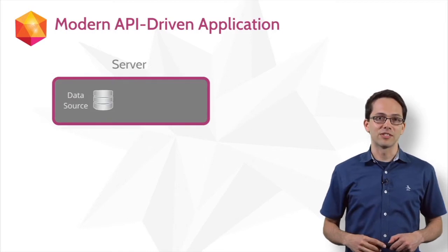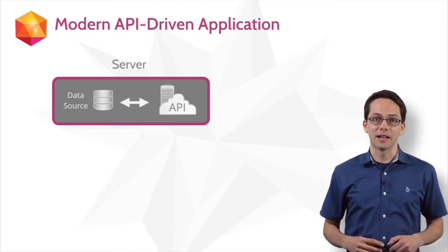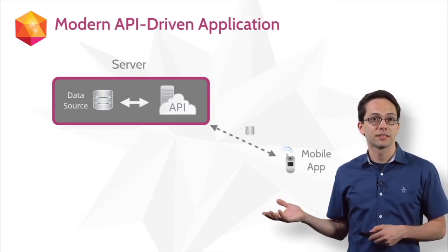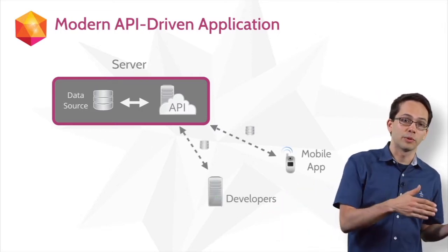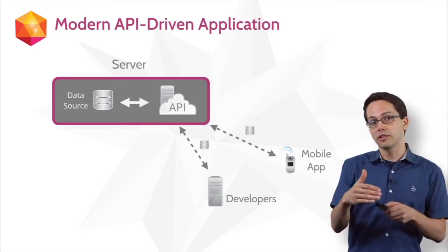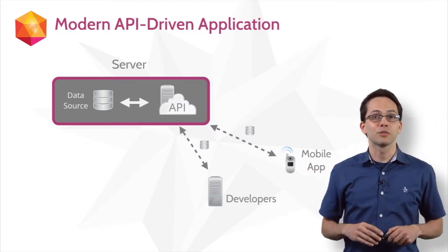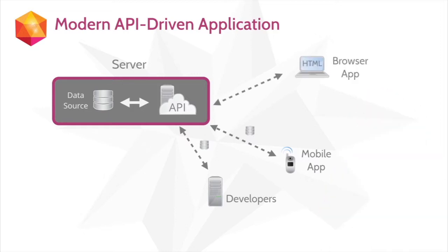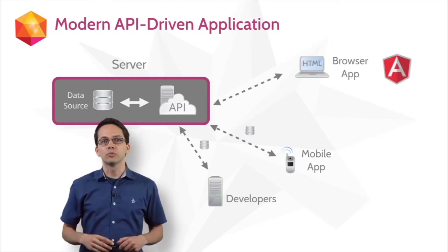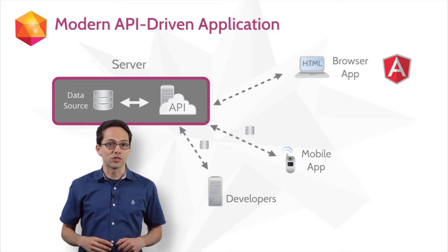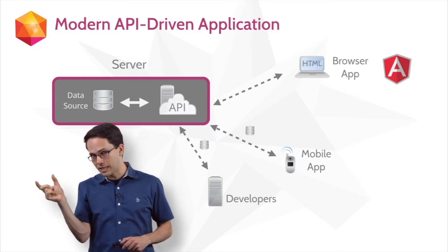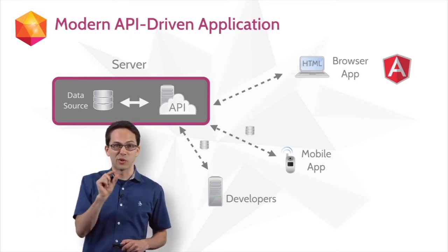An increasing number of applications these days are building their own APIs. They might do this to interface with a mobile application, say on iOS. They might also build an API so that other developers can build applications that communicate with their application. They might also build APIs to communicate with front-end applications, like the application we're building in this course using Angular. So in this course, we'll be building a front-end application using Angular which will communicate with a back-end application, but we're not going to be building that back-end — we'll just focus on the front-end.